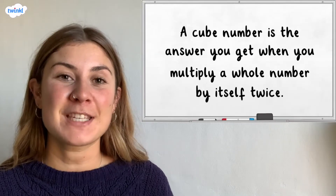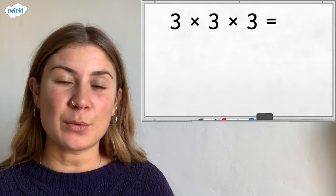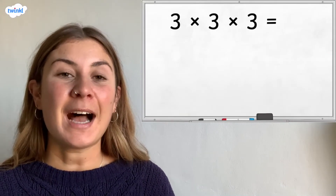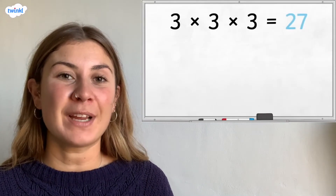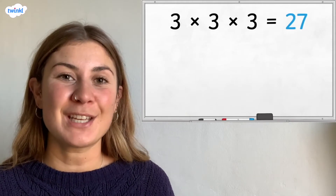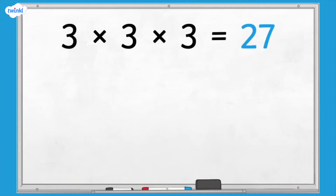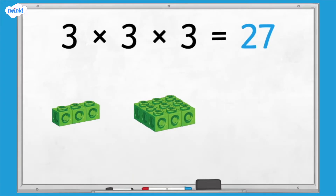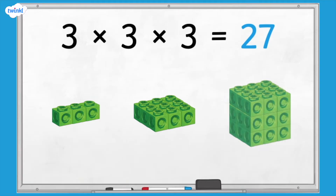For example, 3 multiplied by 3 equals 9, and multiplied by 3 again equals 27, so 27 is a cube number. If we use cubes to make an array showing 3 rows of 3, and then make the array 3 cubes high, we can see why it is called a cube number.